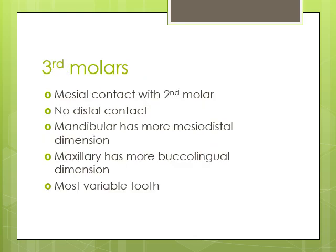The maxillary and mandibular third molars both have mesial contact with their respective second molars. They are non-succedaneous teeth. They have no distal contact. The mesiodistal width of the mandibular third molar is more than the buccolingual width, whereas the maxillary third molar has more buccolingual dimension than mesiodistal dimension. They are the most variable and smallest of all molars, with great variability in crown and root morphology.